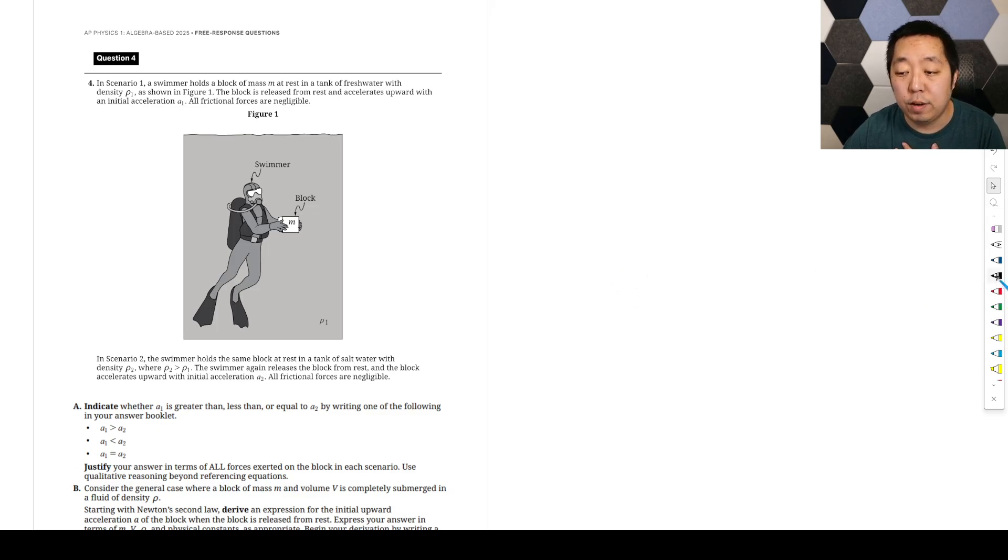All right, so let's take a look at the fourth FRQ from AP Physics 1 on the 2025 exam. We have a swimmer who holds a block M at rest in a tank of freshwater density rho. The block is released from rest and accelerates upward with an initial acceleration A1. All frictional forces are negligible.